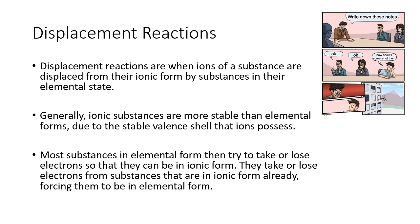Generally, ionic substances are more stable than elemental forms due to the stable valence shell that ions possess. So most substances in elemental form try to take or lose electrons — depending on their nature — so that they can be in ionic form. They take or lose electrons from substances already in ionic form, forcing them into elemental form.